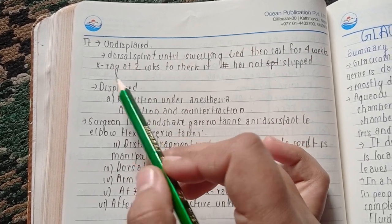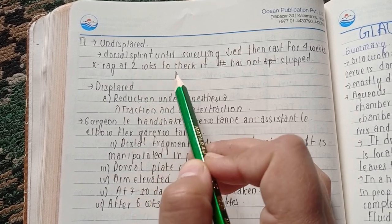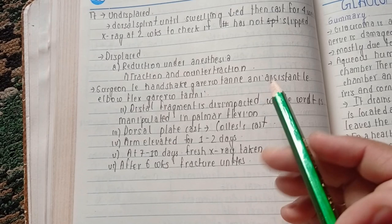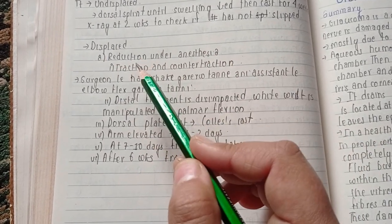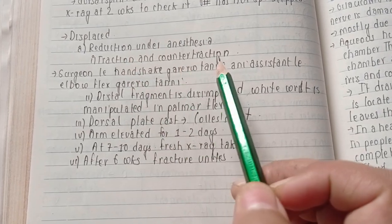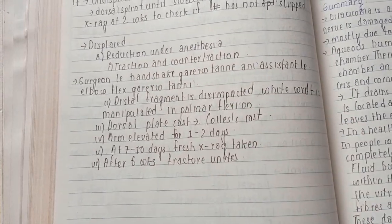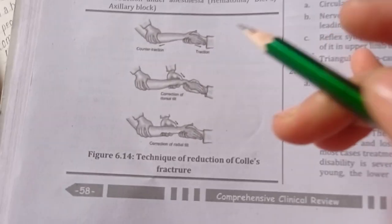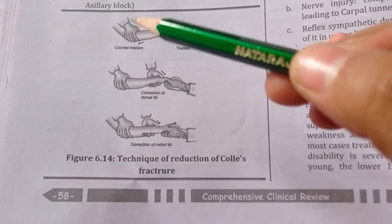X-ray is taken at two weeks to check if fracture has not slipped. If there is displacement, then reduction under anesthesia is done. For this, traction and counter-traction is done.